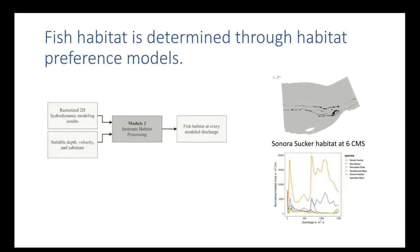Fish habitat is determined through habitat preference models. We fed in a range of depths, velocities, and substrates that were considered suitable for the species we were looking at, and everything outside of that range was considered unsuitable. We went cell by cell in the rasterized modeling results to get suitable habitat at every cell, then quantified that area to get a suitable habitat value.